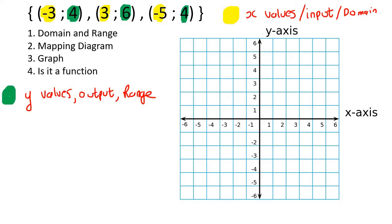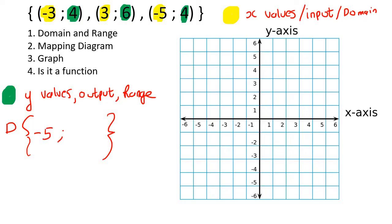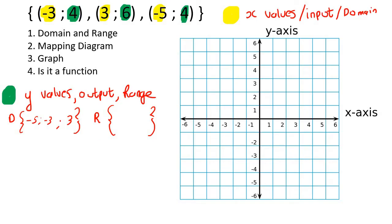So if they ask us for the domain and the range, let's go do that. For the domain, I'm going to open up this bracket and arrange the numbers from smallest to biggest. So minus 5 is first because that's the smallest, then minus 3, and then positive 3. Remember that minus 5 is smaller than minus 3. For the range, that'll be all of the y values. If there is a number that repeats - like there is a 4 and a 4 - you just put 4 once, and then you put 6.